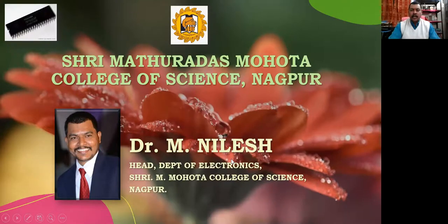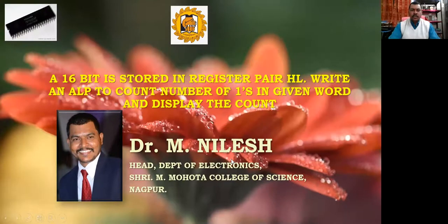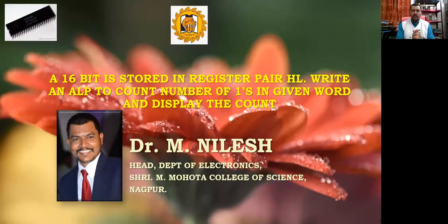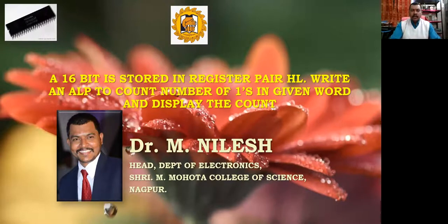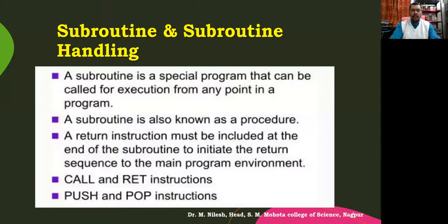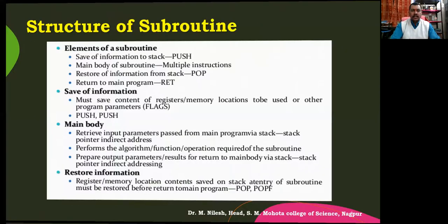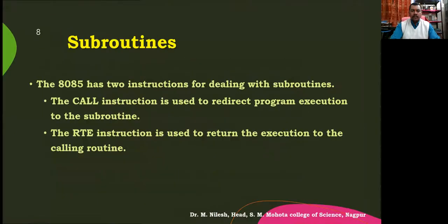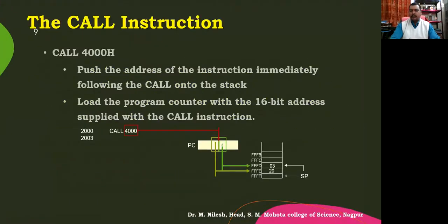In the last class, what we studied was: a 16-bit number was stored in register pair HL. We had to write an ALP to count the number of ones in the given word and display the count. So that was the program we studied, and for that we did this subroutine. We will now land directly on the program.